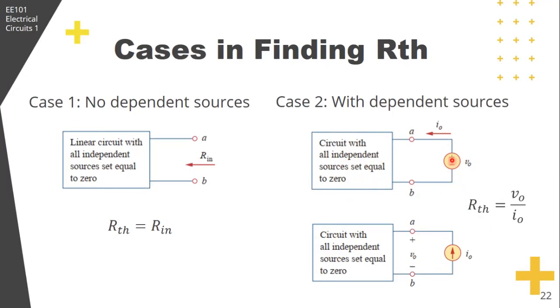After turning off independent sources, we apply a voltage source V sub O. We need to excite the circuit. So we apply a voltage source V sub O at terminals AB and determine the resulting current I sub O. Then RTH is just V sub O divided by I sub O.